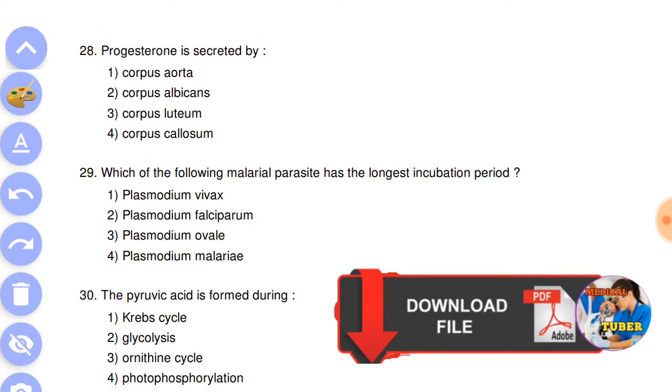Question number 28: progesterone is secreted by answer is the third, corpus luteum. Next question: which of the following malarial parasites has the longest incubation period? Answer is the fourth, Plasmodium malariae.